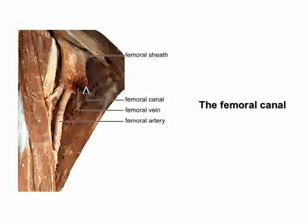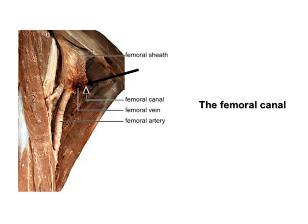On the medial side of the vein is a space called the femoral canal, which allows expansion of the vein. It also provides a potential route for herniation of abdominal organs, for example a loop of small intestine. Femoral hernias are more common in women than in men.